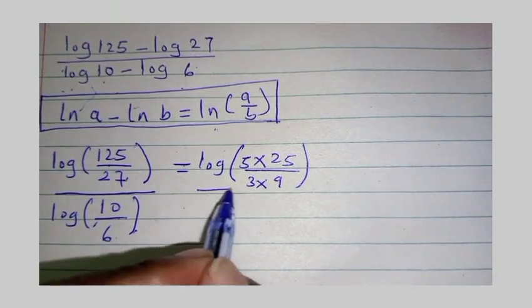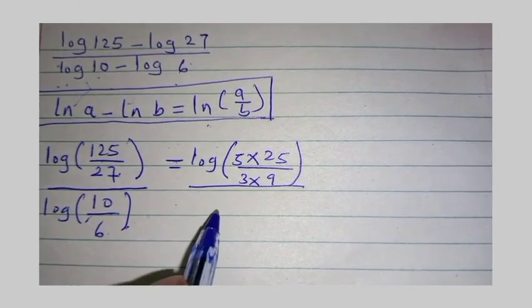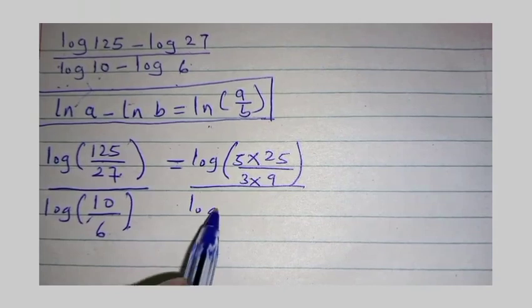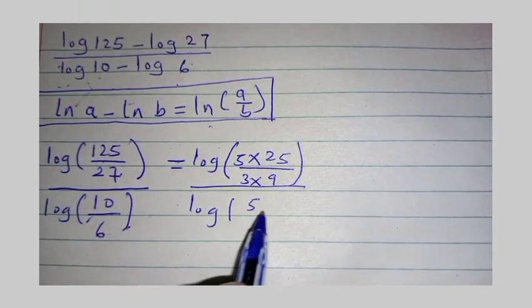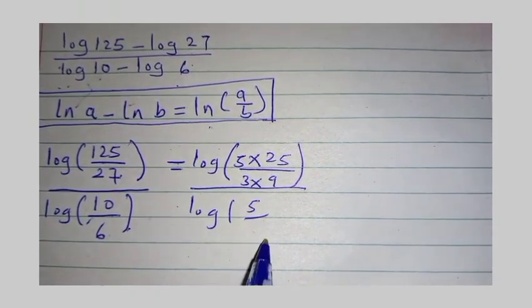Everything here divided by, here we can simplify by 2. 10 divided by 2 is 5 and 6 divided by 2 is 3.